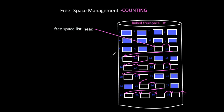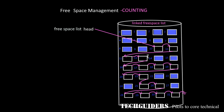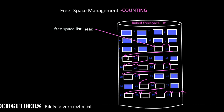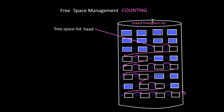The next method is counting. In this example of the linked free space list, we can see that we have one free block and then a continuous set of three free blocks. Even then, we do keep the addresses of each and every free block in this method, as well as in grouping. To avoid this, in counting we keep a count of the number of continuous blocks.